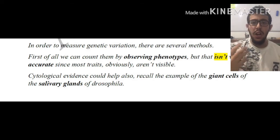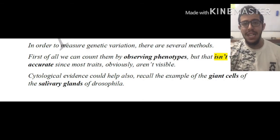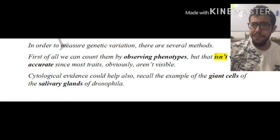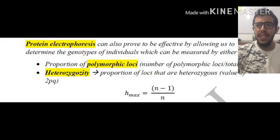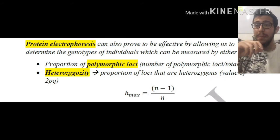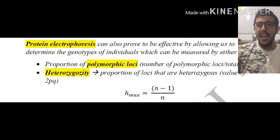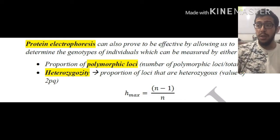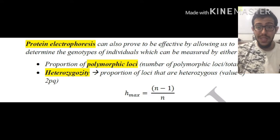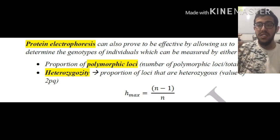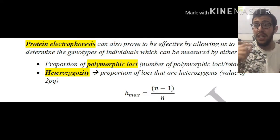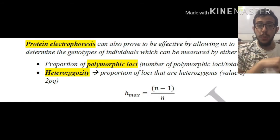Cytological evidence could also help — recall the example of the giant cells of the salivary glands of Drosophila from year two. Protein electrophoresis can also prove quite effective by allowing us to determine the genotypes of individuals, which can be measured by either the proportion of polymorphic loci — the number of polymorphic loci divided by the total — and the heterozygosity, which is the proportion of loci that are heterozygous, represented by the value 2pq.